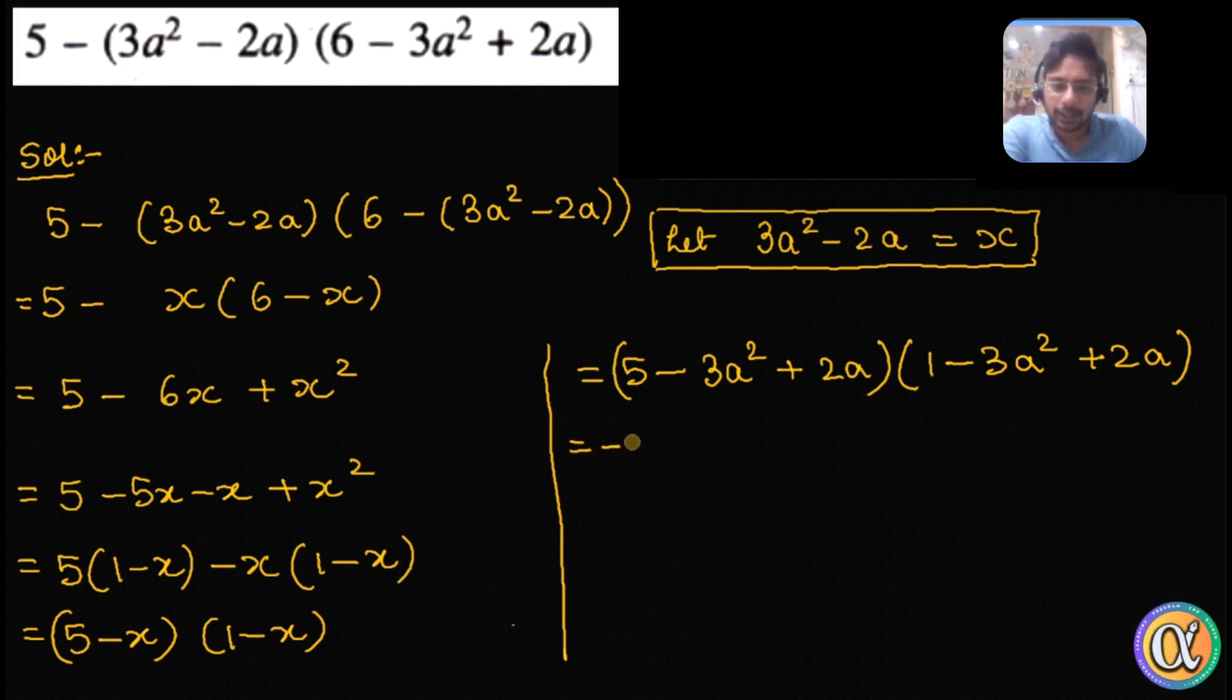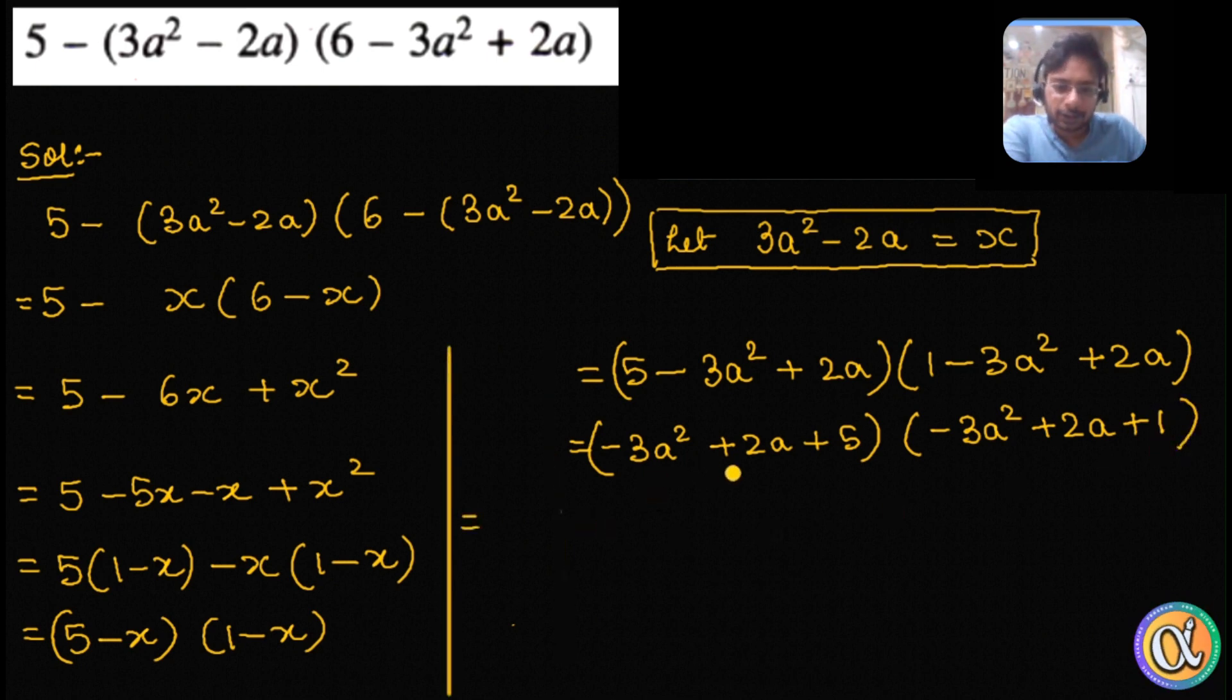Let's rearrange them and write it as minus 3a square plus 2a plus 5. I did this because the a term must be in the middle. Same thing we do with the second bracket. Let's write this as minus 3a square plus 2a plus 1. Let's try to factorize the first bracket again.